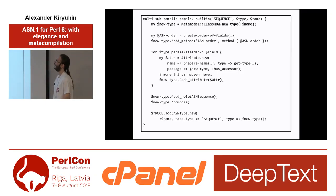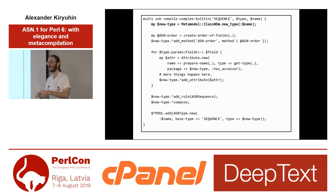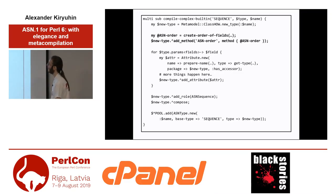And then we just create, using the Metamodel class HOW, a new type. It is as if you would define a class, but it happens at runtime — and this runtime happens at compile time. And then there are some things needed for ASN.1 — we define an order of fields, some tedious and not very interesting code, which is removed here.